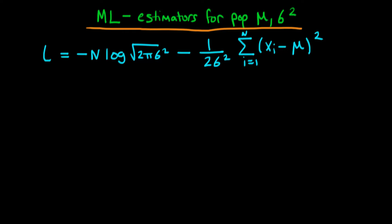At the end of the last video we got the following expression for the log likelihood in the situation whereby we were dealing with trying to estimate the population mean and the population variance if we assumed that the population error term was itself normally distributed.